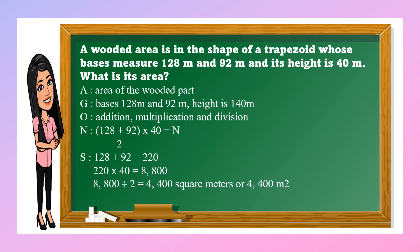So let us add first 128 and 92 equals 220. Then multiply by 40, 8,800. Then divide it by 2, 4,400 square meters. So the wooded area measures 4,400 meters squared.